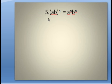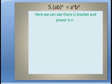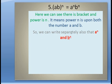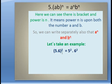Now come to the fifth property: (a into b) to the power n is equal to a to the power n into b to the power n. Here we can see there is a bracket and the power n applies to both numbers a and b inside it. So we can write them separately. For example: (5 into 6) whole to the power 2 equals 5 to the power 2 into 6 to the power 2.